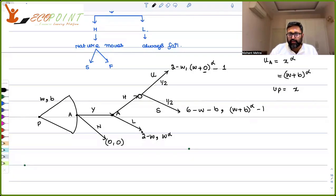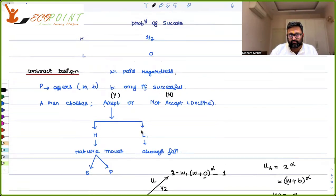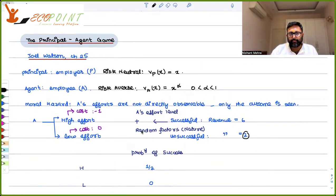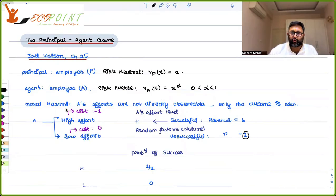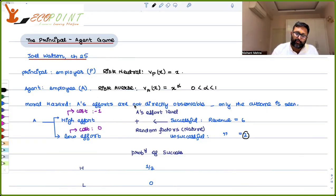We're going to take our discussion of the principal-agent game further. There is a principal — I'm the employer Pat — and you guys are the agent, employee Alan. I'm risk neutral, you guys are risk averse. Alan can have high effort or low effort. If he puts in low effort there is no effort cost; if he puts in high effort the effort cost is minus one. With high effort, the project can be successful or unsuccessful. If successful, revenue is six; if unsuccessful, revenue is two. Probability of success is half.